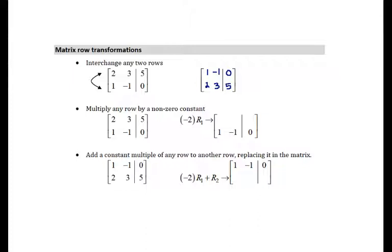The second kind of transformation is to multiply any row by a non-zero constant. So I'm not allowed to multiply by zero because that just erases all of my information. But I can multiply any row by a number that is not equal to zero. So row one in this case is this first row 2, 3, 5. I'm going to replace that row with every one of those numbers multiplied by negative 2, which gives me negative 4, negative 6, and negative 10.